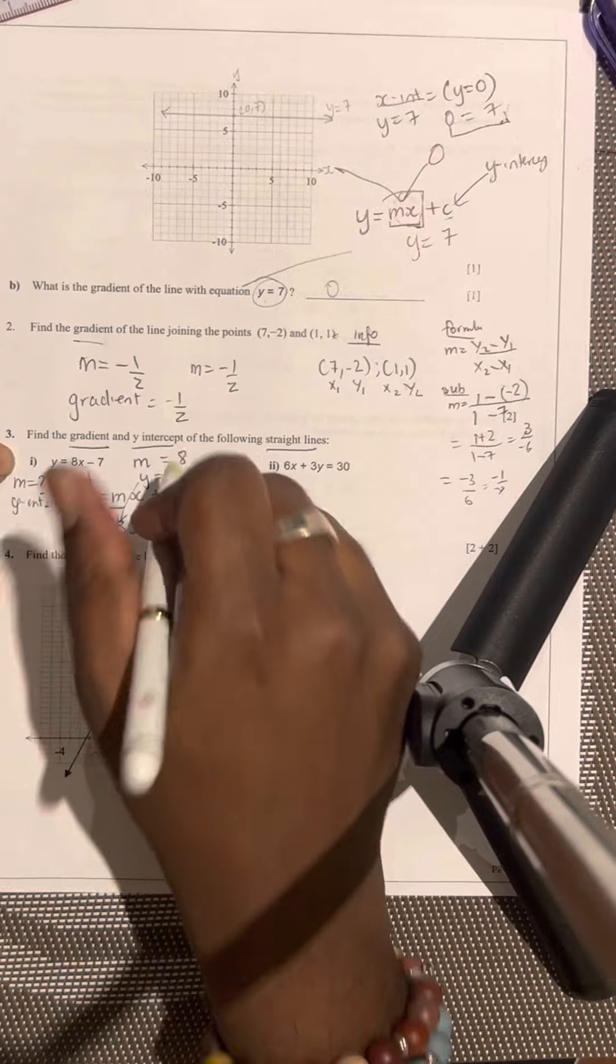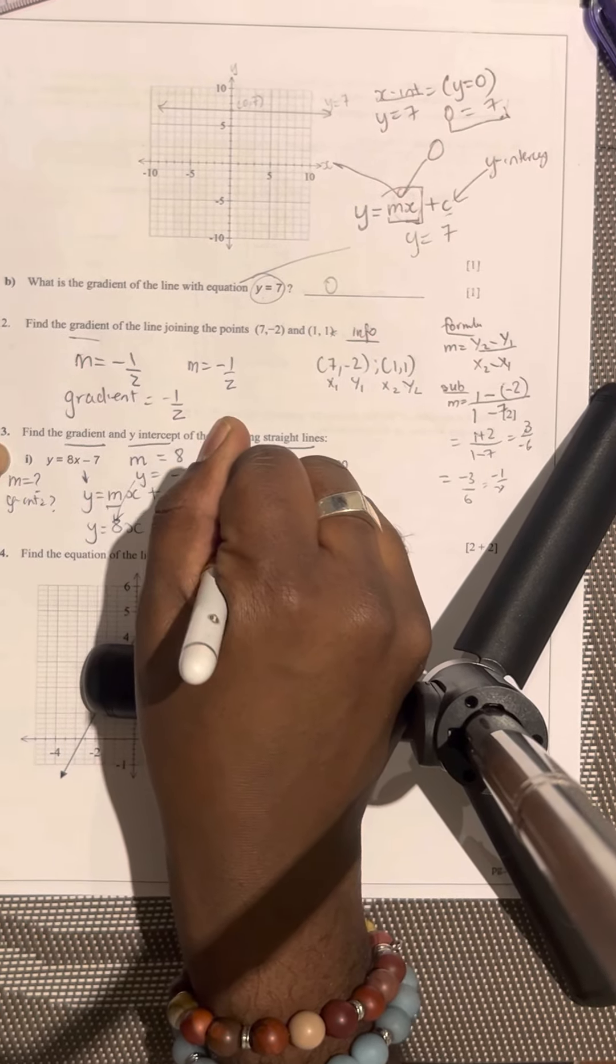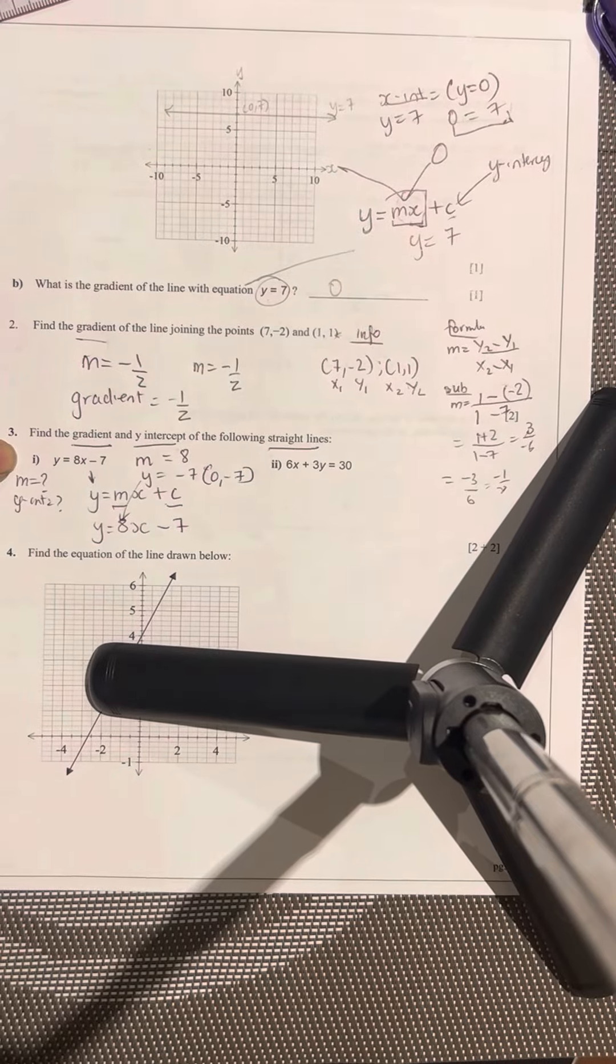And your y-intercept is equal to negative 7. And how I want you to write your y-intercept is not just by writing negative 7. You have to write the coordinate as well. Okay, so that has to be done.